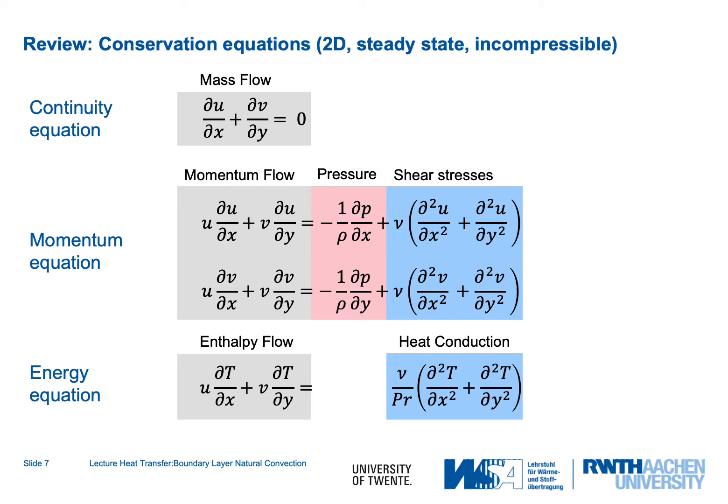Let's review our conservation equations for the case of a two-dimensional, steady-state, incompressible fluid problem. First, we have the continuity equation; then for each direction we have the momentum equation; and third, the energy equation. The x-direction is along the plate, the y-direction is perpendicular to the plate. In the momentum equation, the diffusive effect of momentum is represented by viscosity. In the energy equation, the diffusive effect of temperature is represented by the ratio of viscosity and Prandtl number. Since the flow is driven by density differences — buoyancy and gravity — we add the effect of gravity to the x-direction momentum equation.